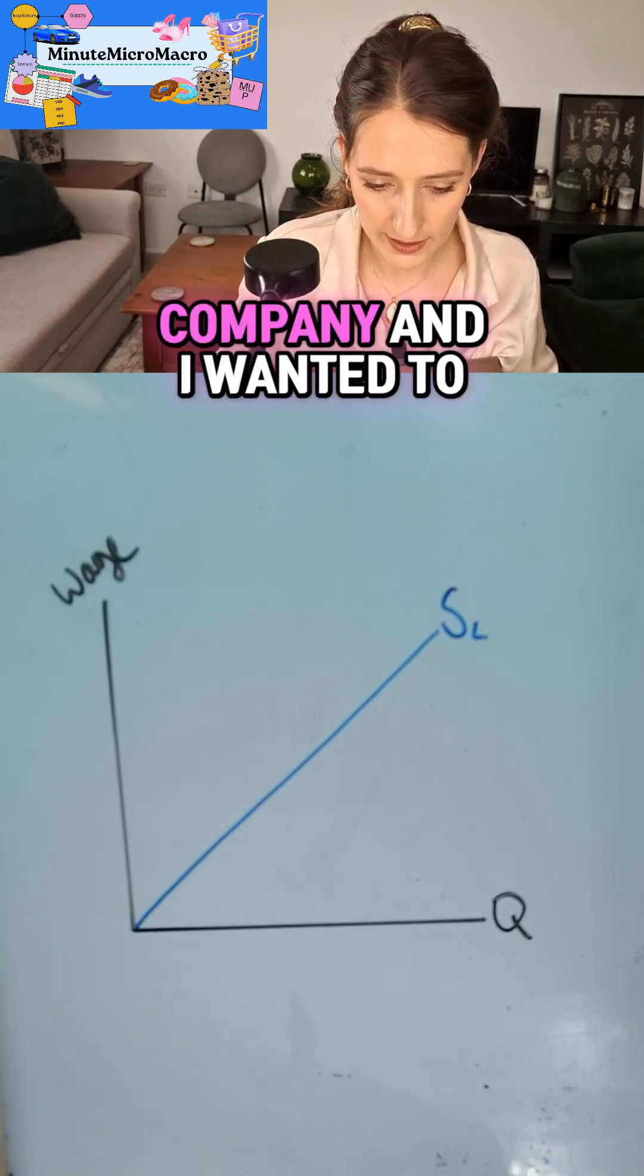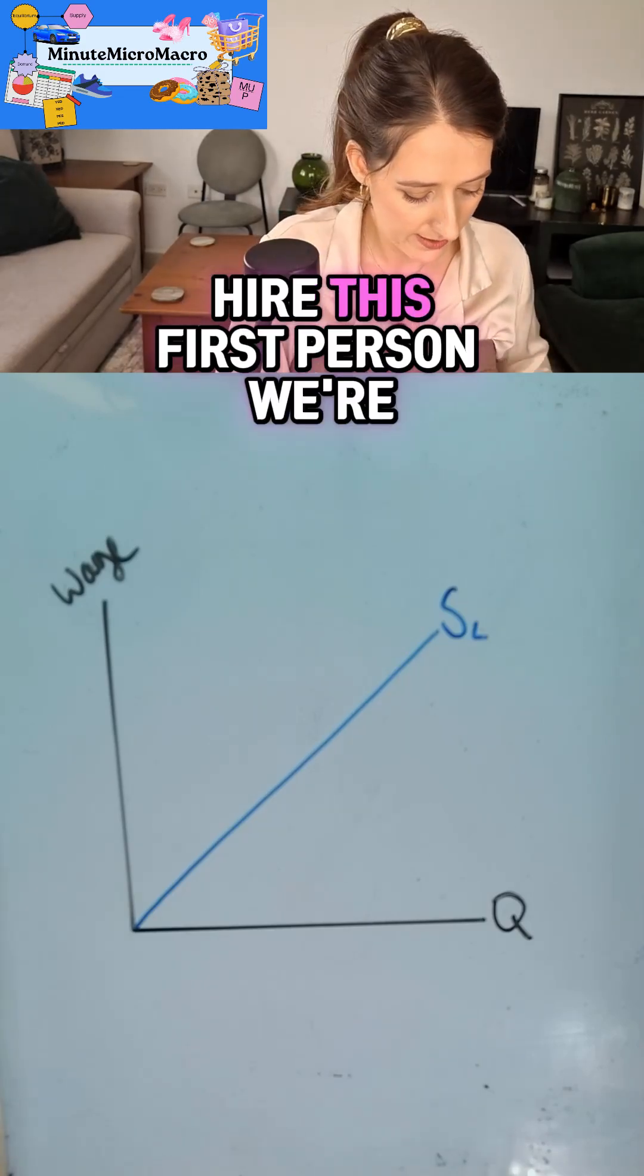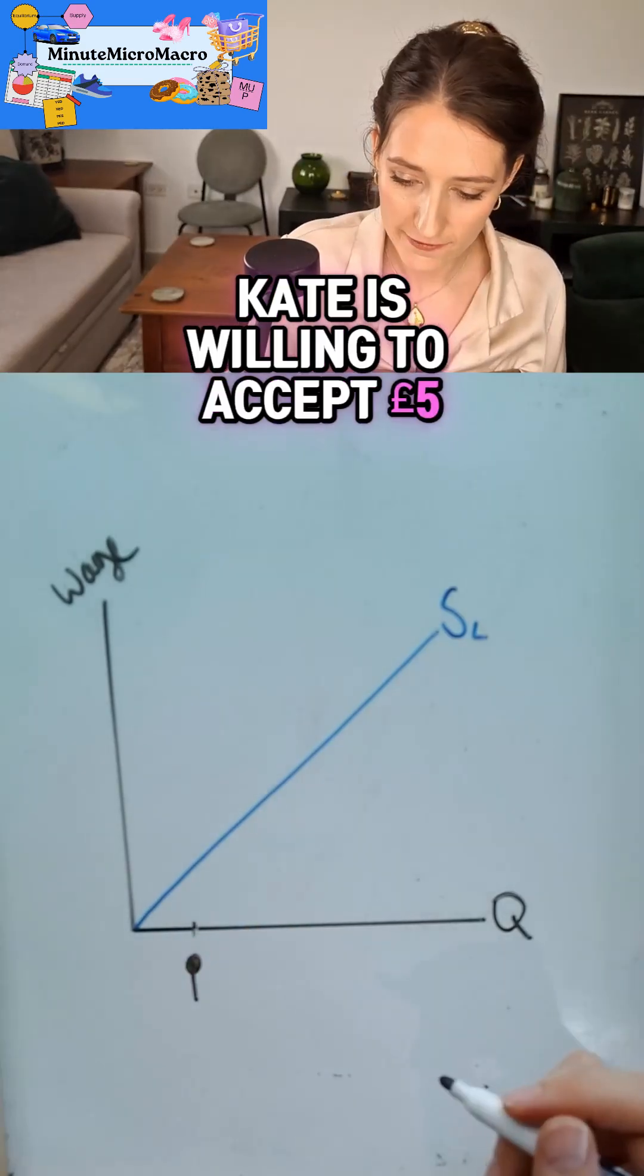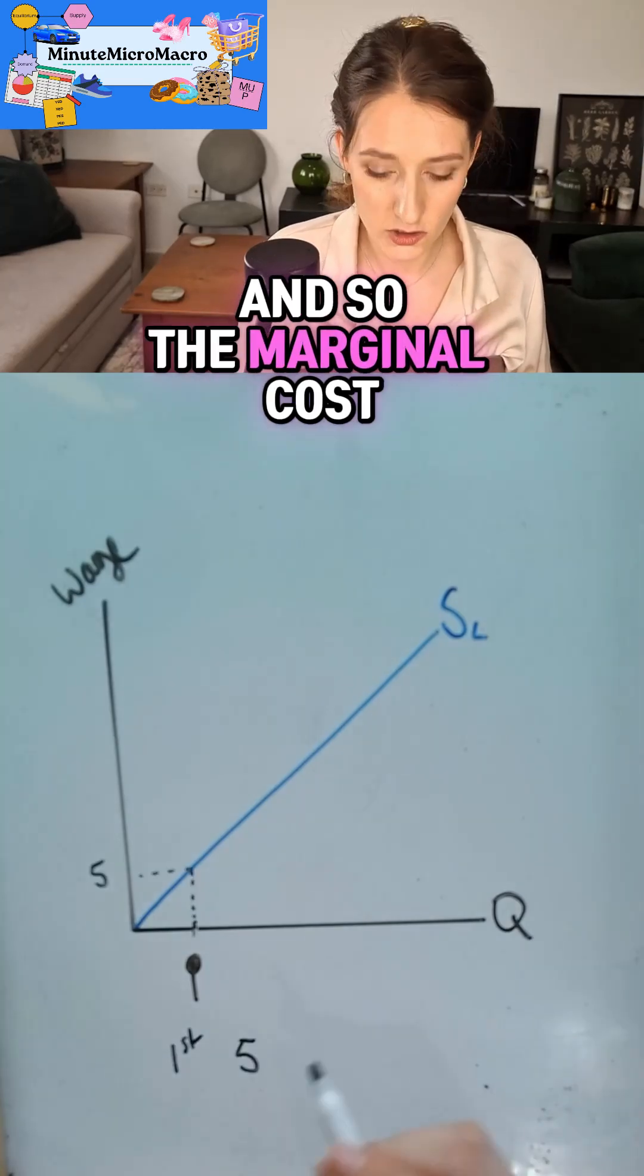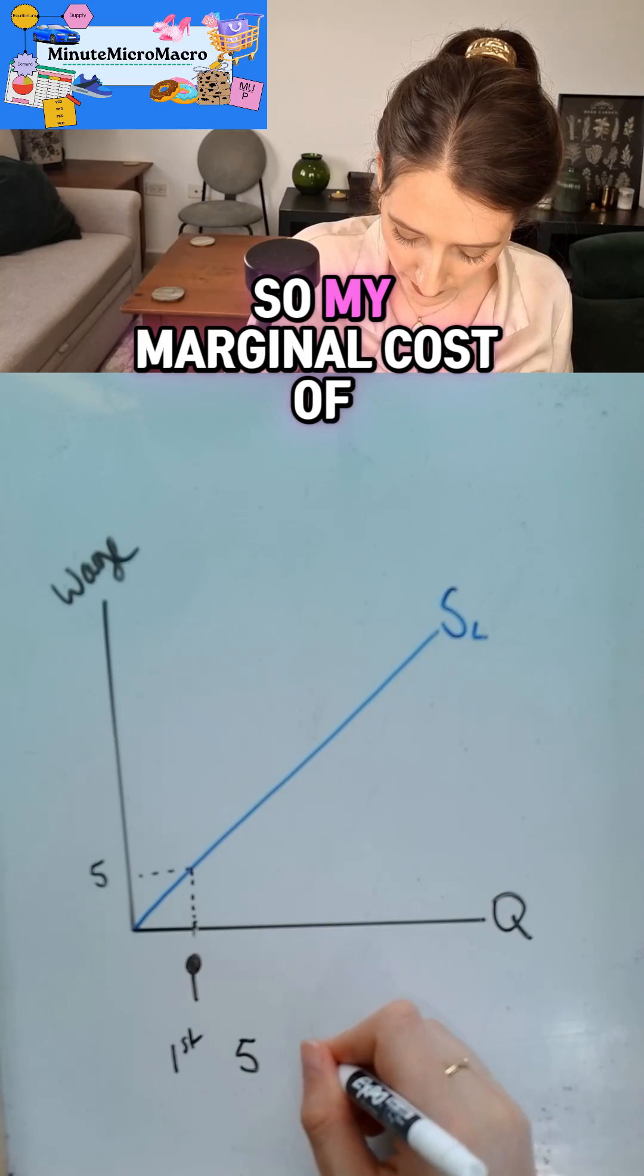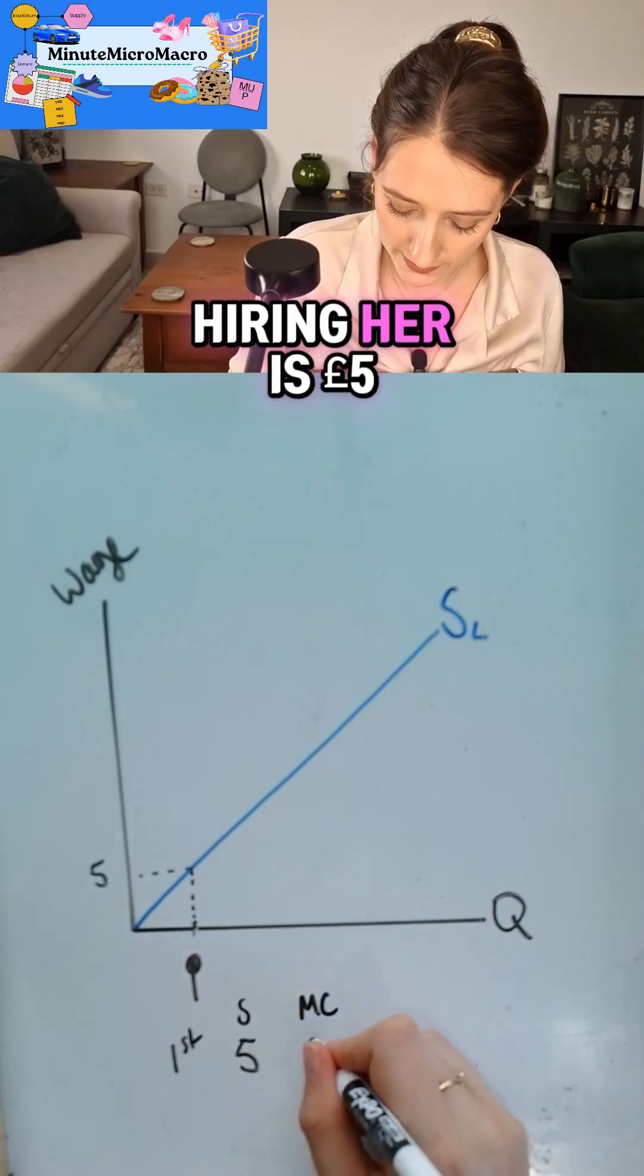Now if I was a company and I wanted to hire this first person, we're going to call person number one, Kate. Kate is willing to accept five pounds and so the marginal cost of hiring her went from zero workers to one worker, she wants five pounds. So my marginal cost of hiring her is five pounds.